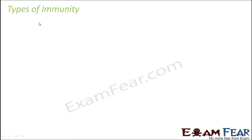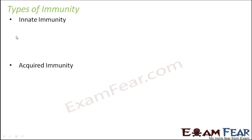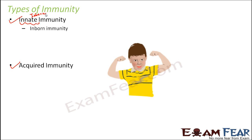There are broadly two types of immunity: innate immunity and acquired immunity. The word innate means inborn, so innate immunity is the type of immunity which is present inside our body by birth. When a baby is born, it already has some immunity so that if small germs attack, the body can fight against them.